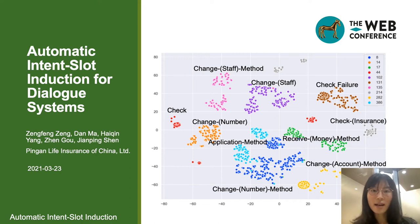Hi everyone, this is Daniel from the AI Group of PN Life Insurance Company of China. Today I would like to share our work on Automatic Intent-Slot Induction for Dialog Systems.